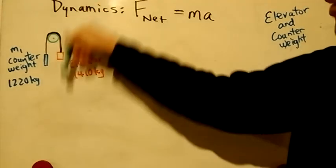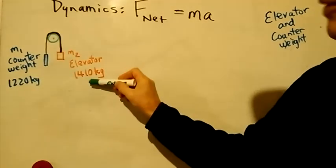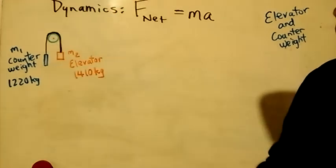We've got the weight of the elevator down, and we've got the weight of the counterweight down, and the weight of the elevator is greater. So it'll pull the elevator down and lift the counterweight up.